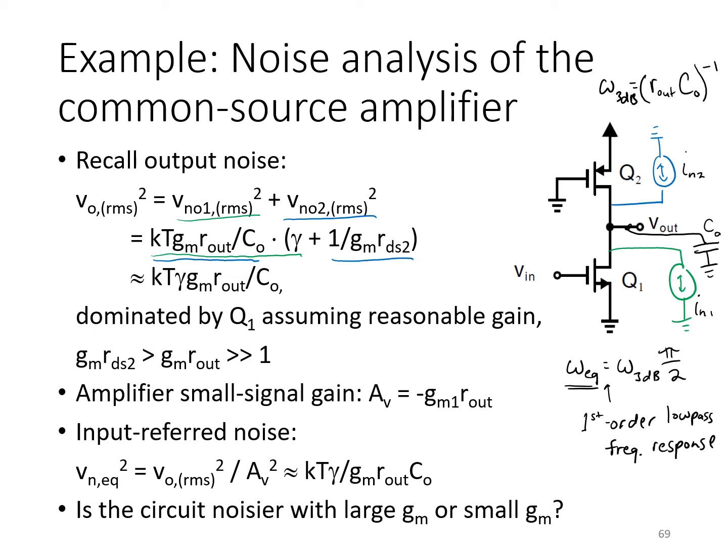Noting that the bracketed term over here has two components. One is gamma, which is a value of a constant that's two-thirds for long channels and higher for very short channel devices, whereas the second term is one over GM times RDS2. We're using in these expressions GM of the signal path transistor, GM1. That term, therefore, the second term in the brackets, is approximately the gain of the stage.